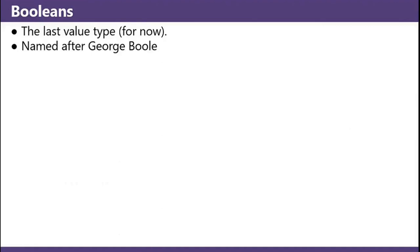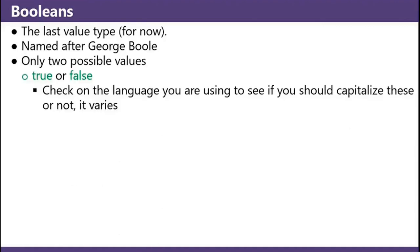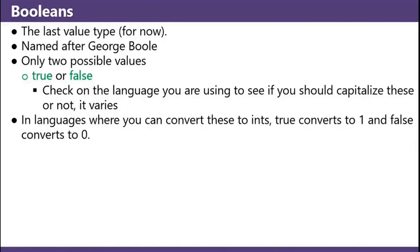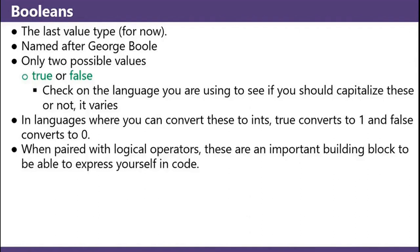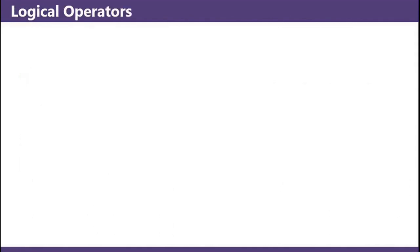Booleans — the last value type for now. Named after George Boole. Only two possible values: true or false. Check the language you're using to see if you should capitalize these or not — it varies. In some languages you can convert these to ints: true converts to 1, false converts to 0. When paired with logical operators, these are an important building block to be able to express yourself in code.